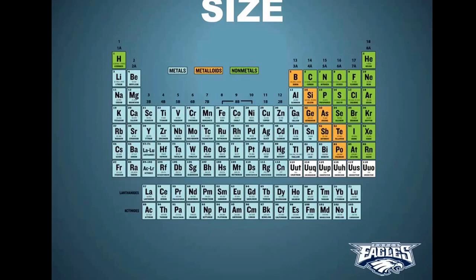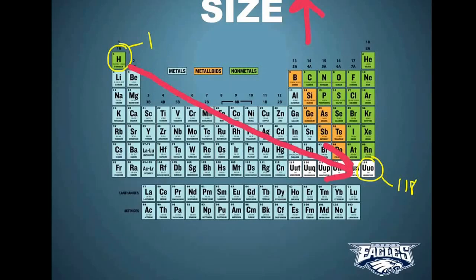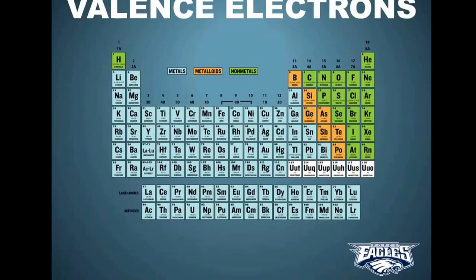The periodic table also gives us a great idea of how big elements are. Element number one, hydrogen, has one proton and usually one neutron and is the lightest, smallest element we know of. Element number 118, on the other hand, is the largest — it has 118 protons, a whole bunch of neutrons, and it's just huge. As you move from left and down towards the right, size gets bigger. Just look at the atomic number — as it goes up, the element gets bigger, has more protons, more neutrons, and so on.